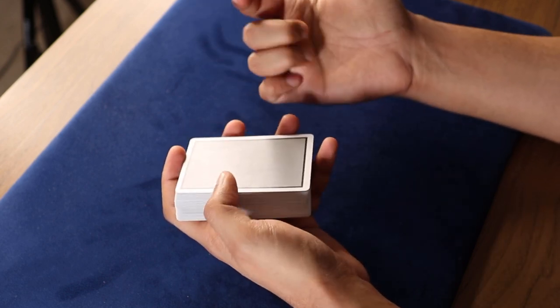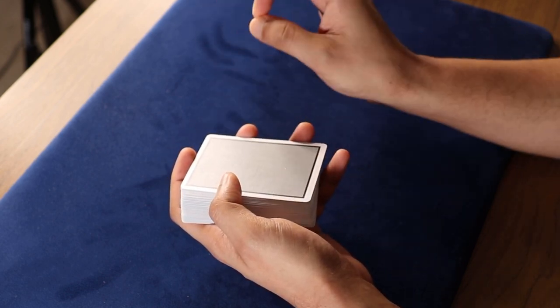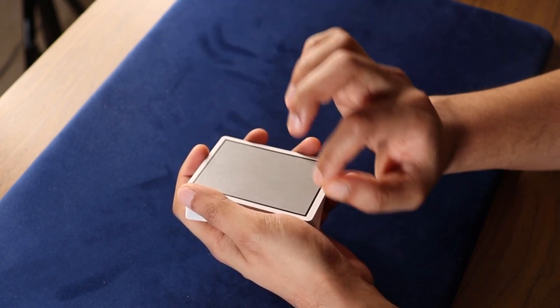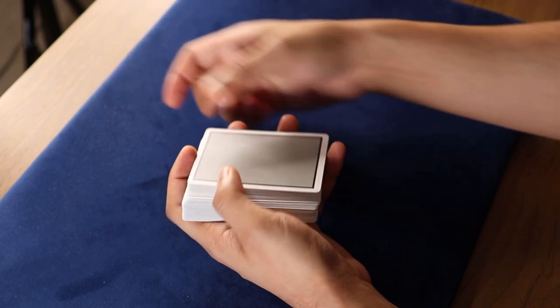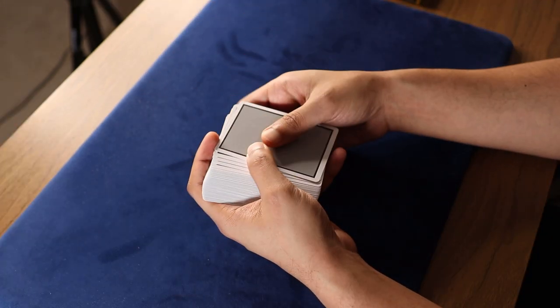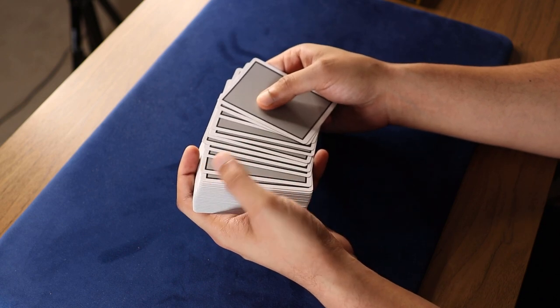So what you're going to do now is count off 10 minus one cards from the top. So it will be nine cards off the top. And the way that I recommend counting off, of course, you don't want to show this to the spectator that you're counting off nine cards. I'd push over three cards at a time. So three, three, three, and we have nine there.